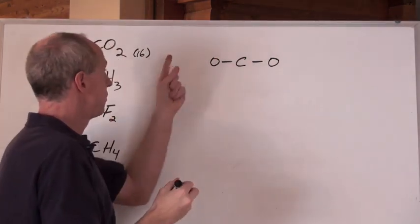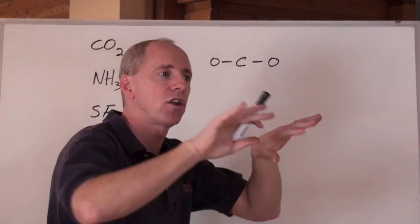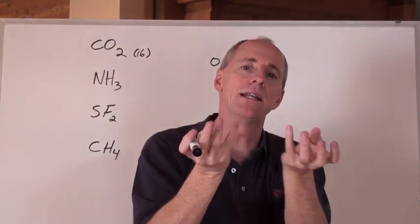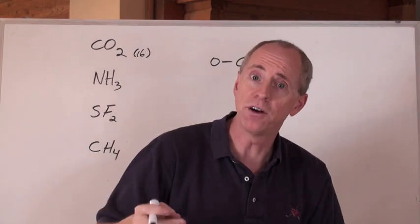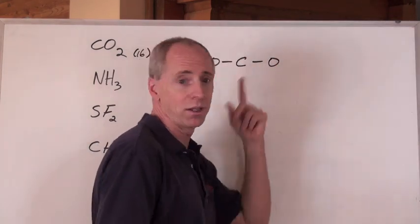Now, there's 16 valence electrons. I've got 2, 4. So now, I'm just going to start from the outsides and work in to be able to get the lone pairs in now. And what I said before, just count up the dots.